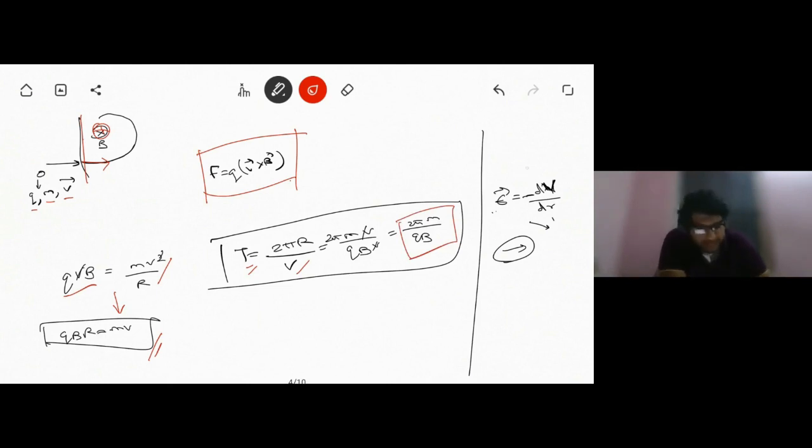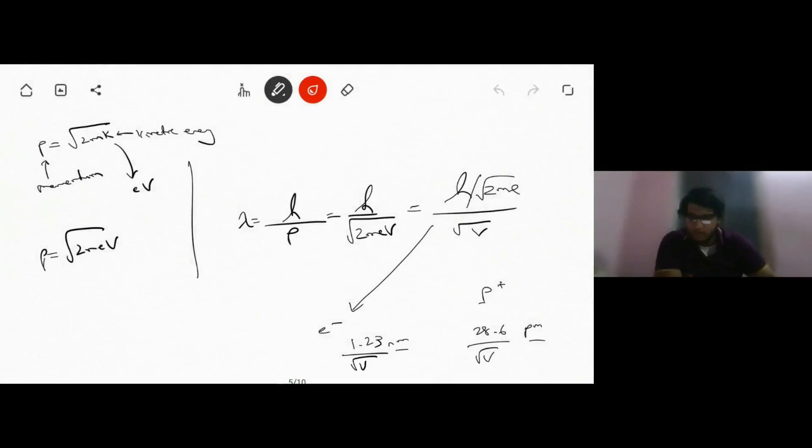Now if you're talking about electrostatics, the electric field can be written as minus dV by dr, stating that electric field is directed along that direction where potential decreases the steepest. Momentum can be written as root of 2mK, where K is kinetic energy.